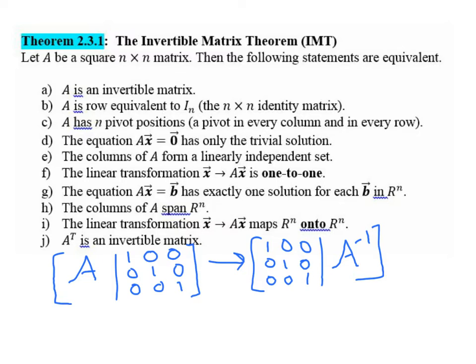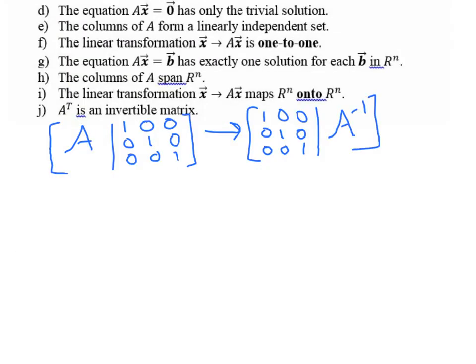Also, this would imply that the equation Ax equals 0, so the homogeneous equation, has only the trivial solution. Because any time you're able to row reduce A to the identity matrix, so let's say we set up A here, and we have our column of zeros here, and then we do a lot of row operations, and we're operating under the assumption that A is invertible, so we're able to reduce this to the identity matrix.